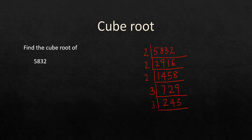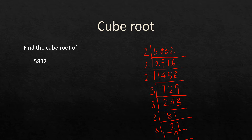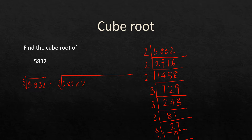Dividing 729 by 3 repeatedly: 729 ÷ 3 = 243, ÷ 3 = 81, ÷ 3 = 27, ÷ 3 = 9, ÷ 3 = 3, ÷ 3 = 1. So 5832 = 2 × 2 × 2 × 3 × 3 × 3 × 3 × 3 × 3 — that's three 2s and six 3s.